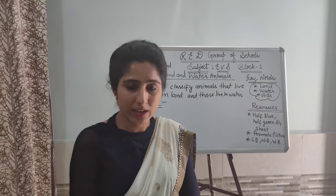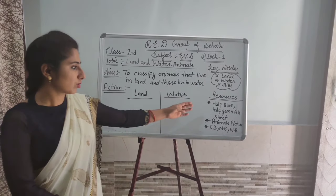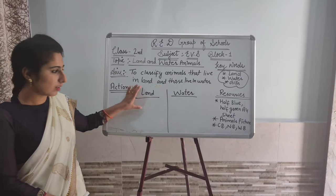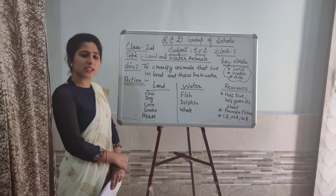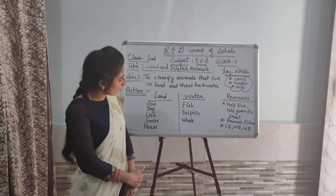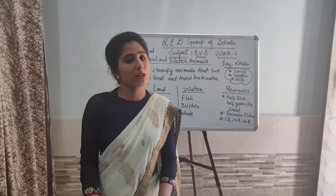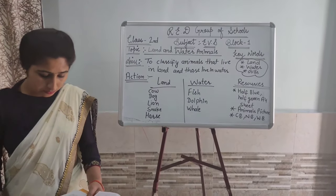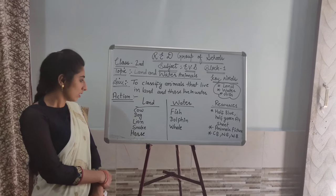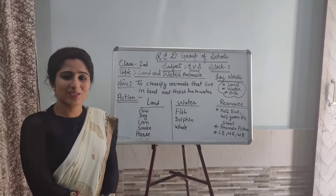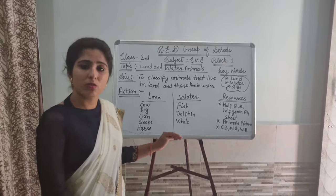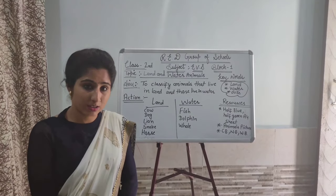You will sort them into Group 1 or Group 2 according to your observations. You might have made your groups based on similarities — some have four legs, some have two legs, some have tails, some are pet animals and some are wild animals. Now take out your half blue and half green A4 sheet, label one as 'Land' and the other as 'Water'. You should have classified the animals: cow, dog, lion, snake, horse — they are living on land. Fish, dolphin, whale — they are living in water.